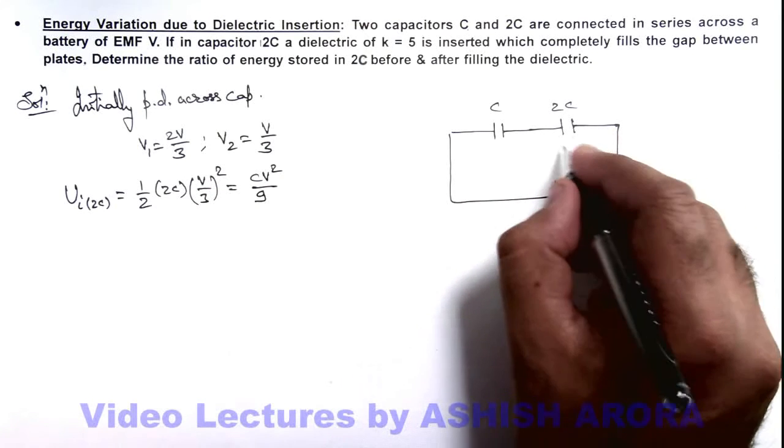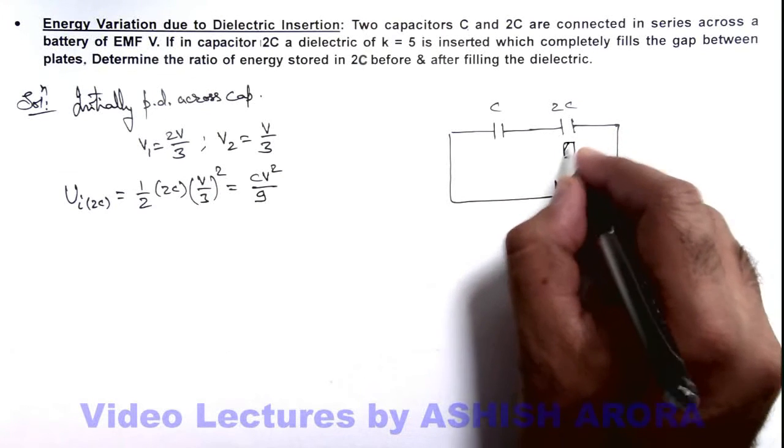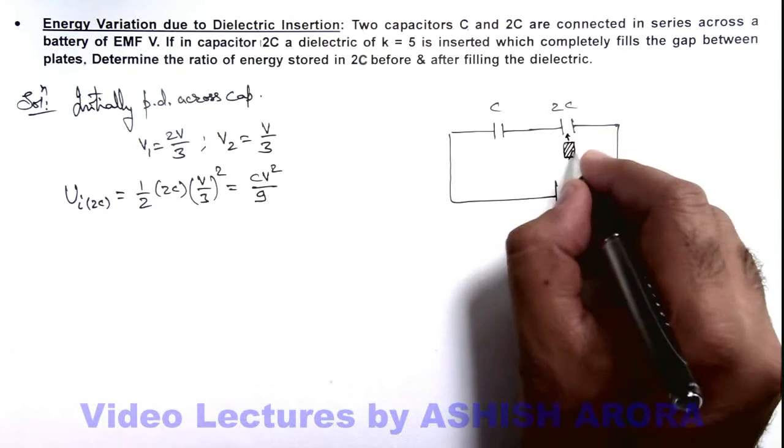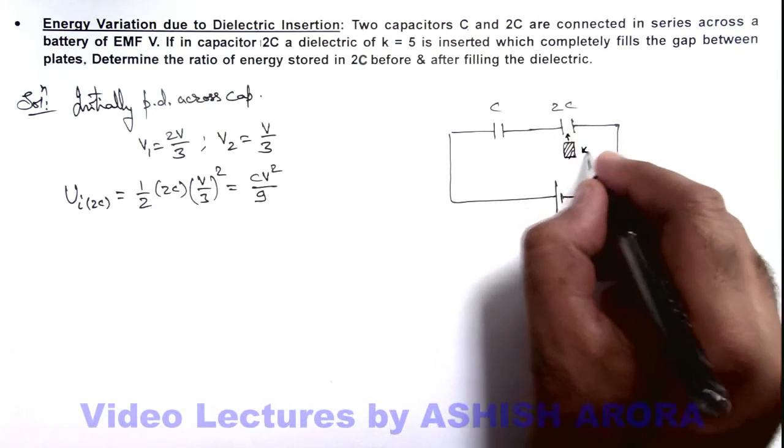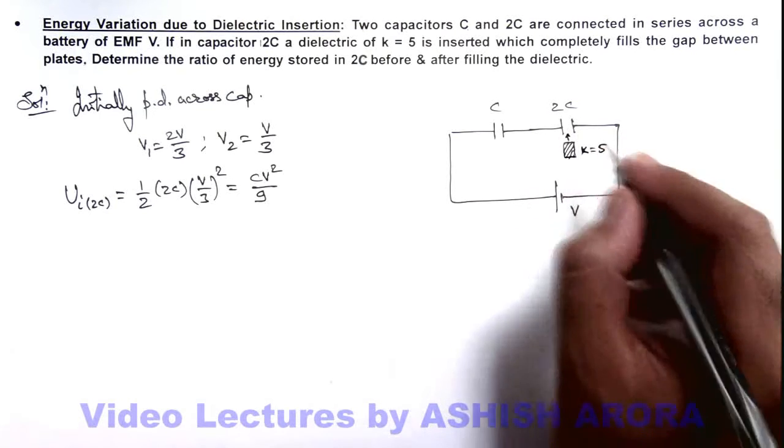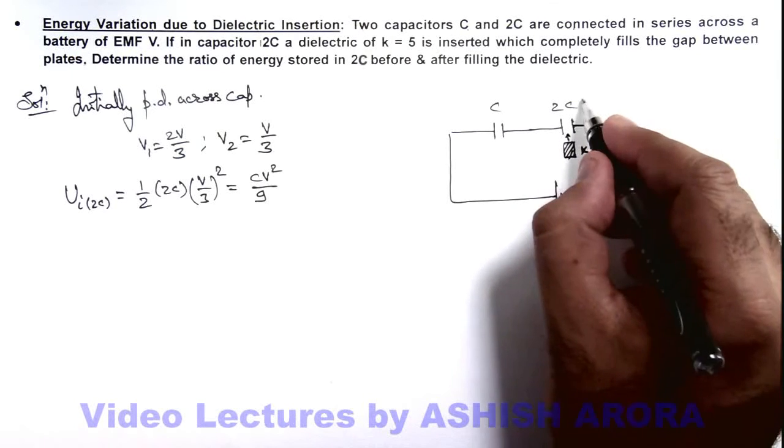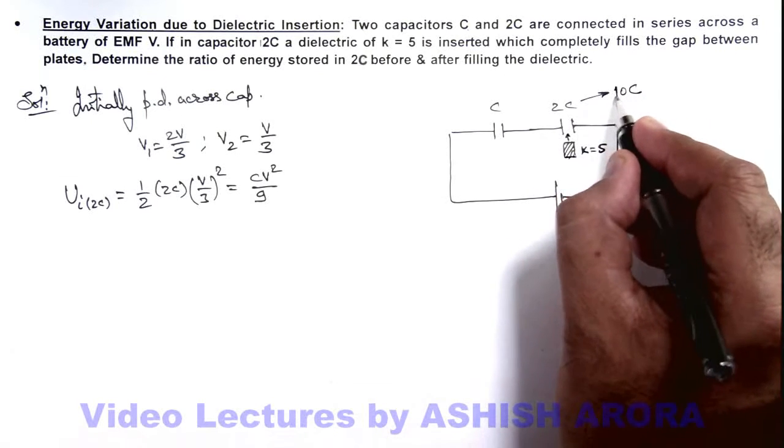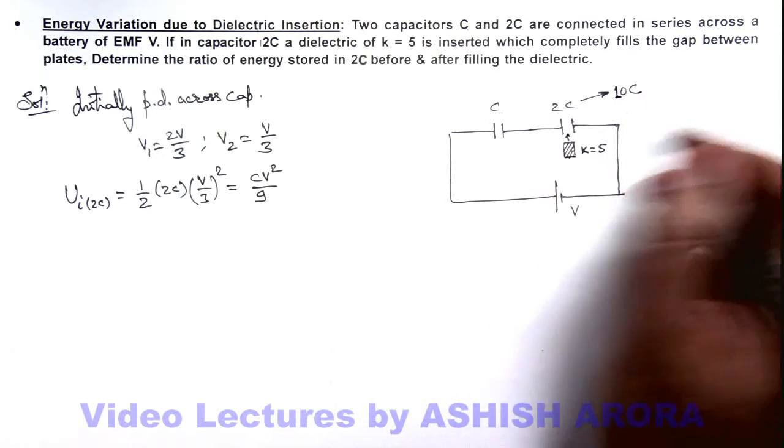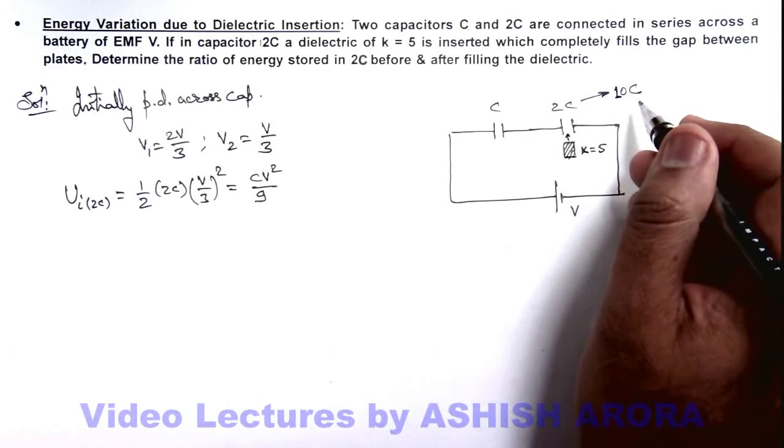Now if we insert a dielectric which fills up the region between the plates of 2C and it is having k is equal to 5, then the capacitance of 2C will change to 10C, because we know after insertion of dielectric it changes from C to kC. So here k is 5 so it'll change to 10C.